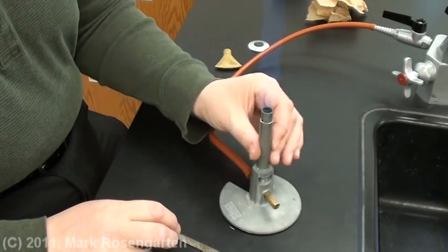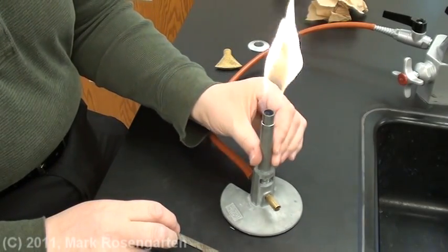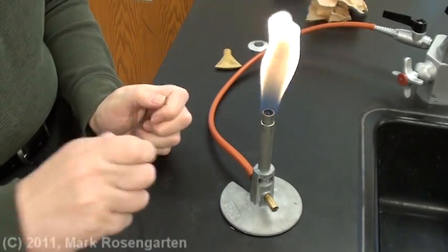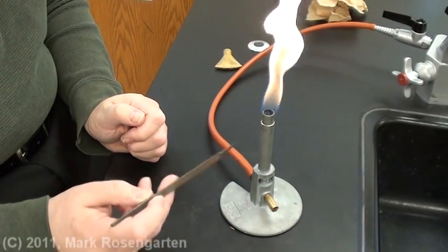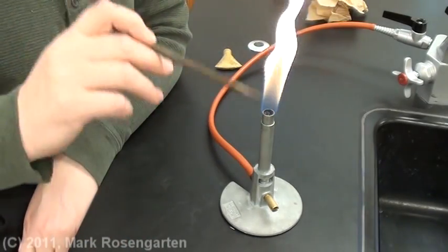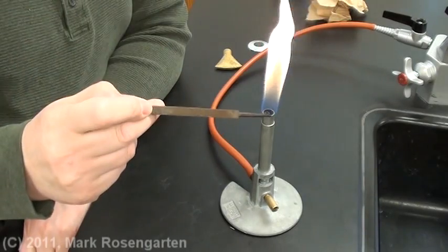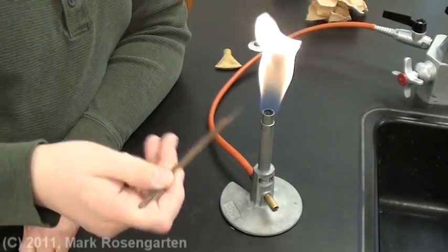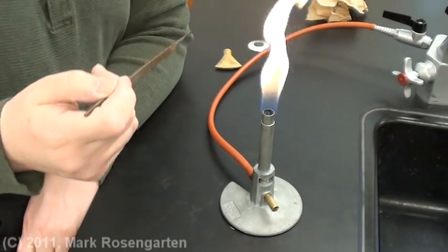If we turn the barrel until the air hole is completely gone, we get a luminous flame. This is because since there is no air in here to mix with the gas, the gas has to burn with the air out here, which it does incompletely. The incompletely burned gas glows in the heat of the flame causing this visible or luminous flame.